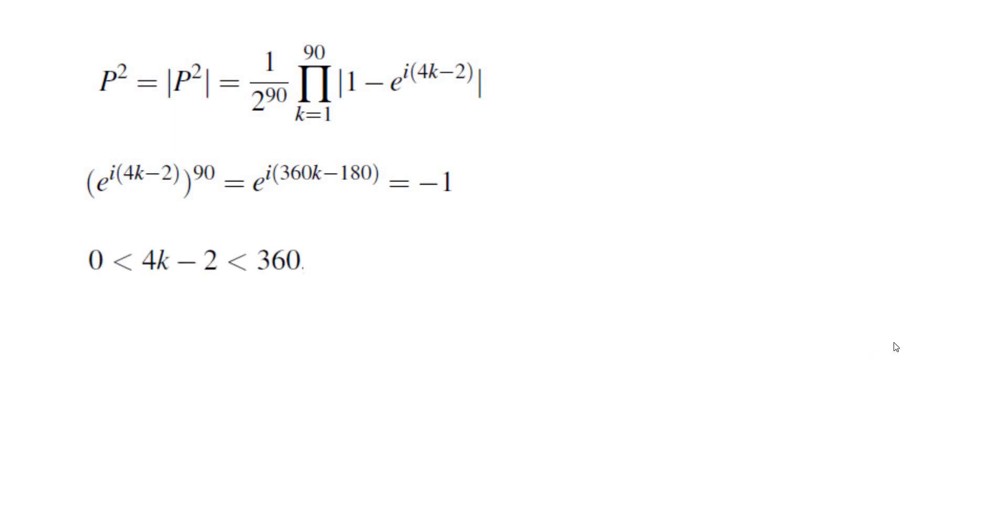In other words, all of these complex numbers satisfy z^90 = -1. Notice that all of these angles 4k-2 are between 0 and 360 whenever k is between 1 and 90.